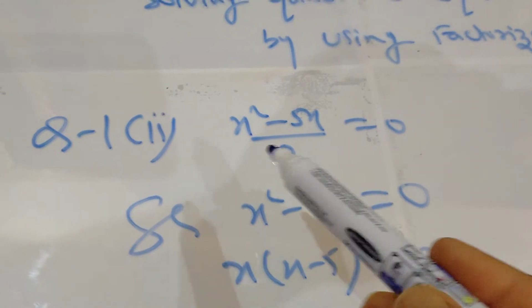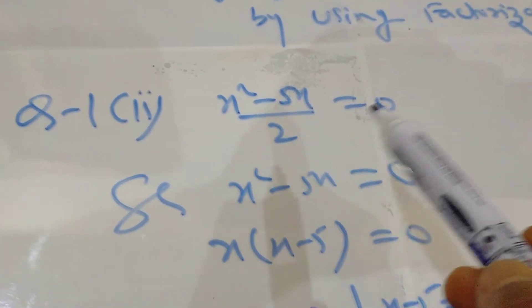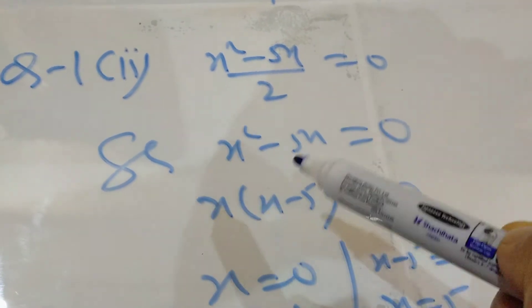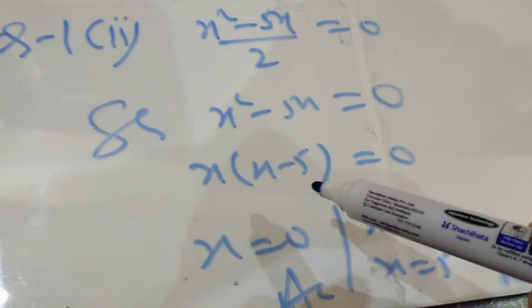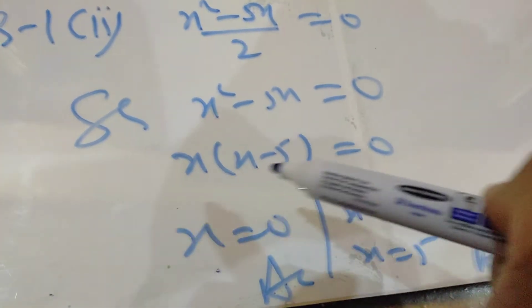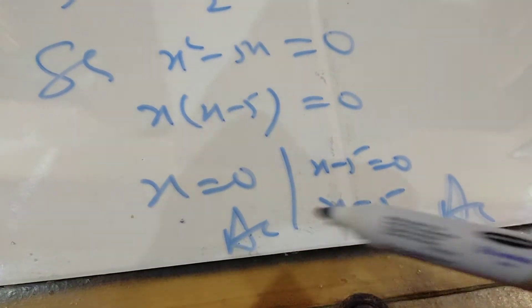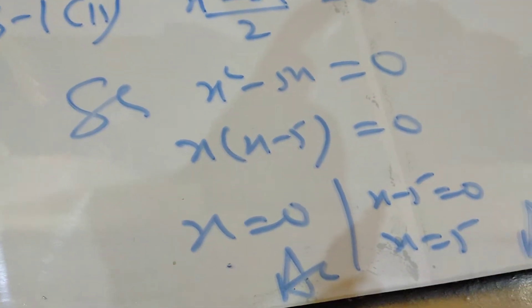Now look at the second part of this question: x² − 5x/2 = 0. I cross-multiply, so 2 × 0 = 0. Here x is common: x(x − 5) = 0. By using the zero product rule, the first factor equals 0 and the second factor equals 0, giving two answers: x = 0 and x = 5.